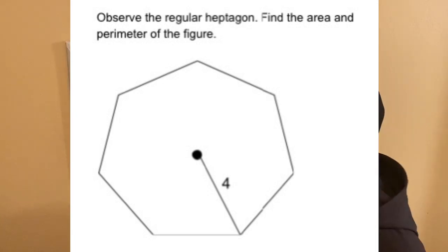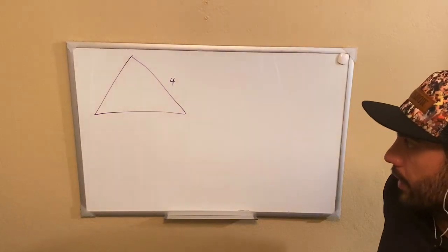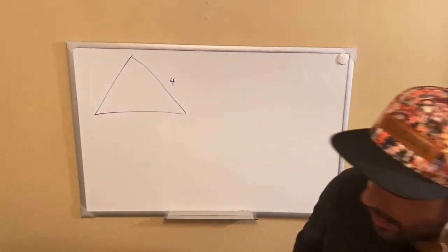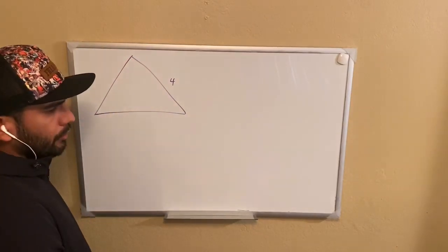So what we have in that drawing is a heptagon. It's a seven-sided regular polygon, and we want to find the area of that shape. So how are we going to do that?